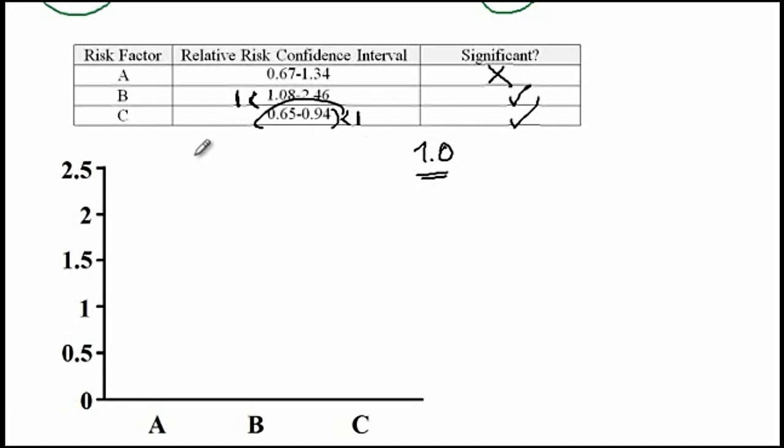Another kind of question that you may encounter is they may give you a confidence interval of the mean and tell you if those treatments are different. Let's say there are different treatments for hypertension, and drug A affects the hypertension index by this much, drug B changes by this much, and drug C changes by this much. The question asks you which of these treatments is significantly different from the other ones.